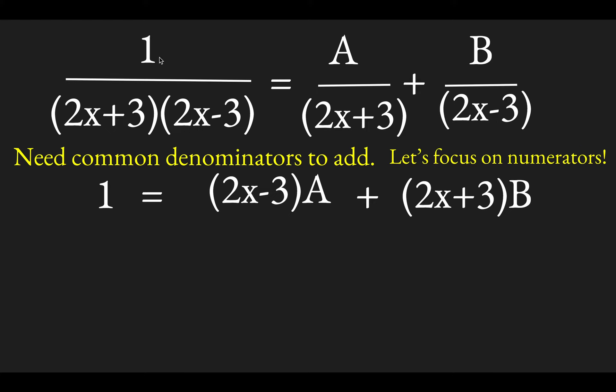So it must be the case if the numerators, the numerator of this side, 1, is going to have to be equal to a times 2x minus 3 plus b times 2x plus 3. And that'll keep this equation true if all the numerators are then equal.